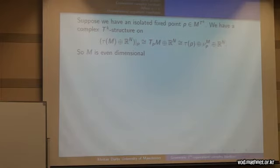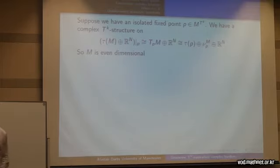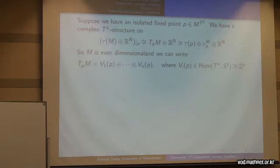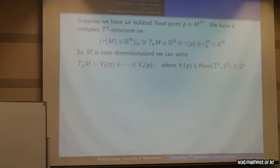Suppose we have an isolated fixed point in our manifold and we have a complex equivariant structure on the restricted stable bundle. This implies that M is even dimensional, as the normal bundle is a complex bundle. We can write the tangent space as a direct sum of irreducible representations, where we think of our irreducible representations as integral vectors — they're weight vectors.